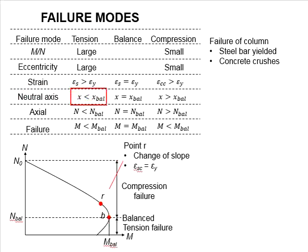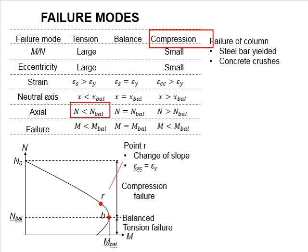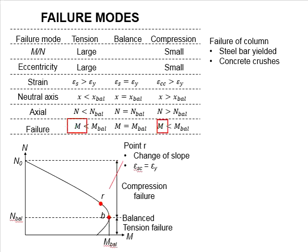In terms of the neutral axis, when the neutral axis x is less than the balanced neutral axis, tensile failure may happen. When it is equal to the balanced neutral axis, the column is in the balanced state. When it exceeds the balanced neutral axis, compression failure happens. In terms of the axial load, if the load exceeds the balanced axial load, compression failure occurs. When it is less than that, tension failure occurs. As for the moment, both the tension and compression conditions will have a moment in the column which is less than the balanced moment.